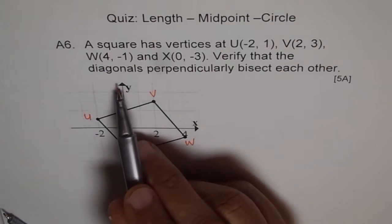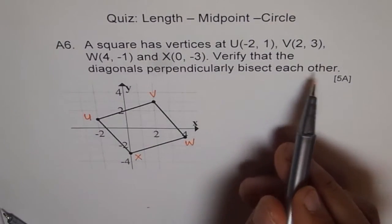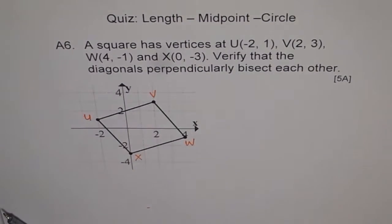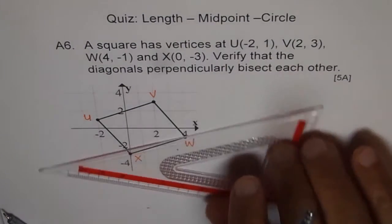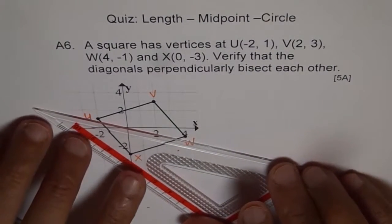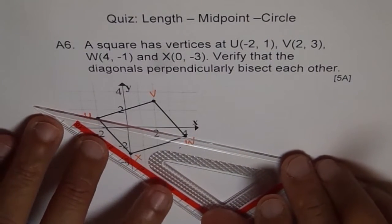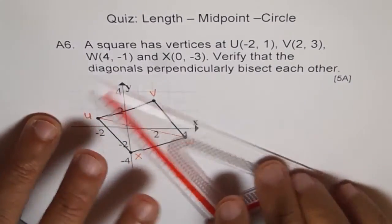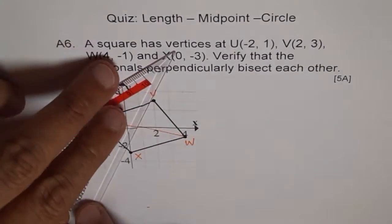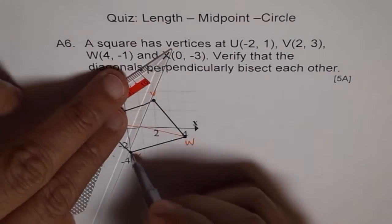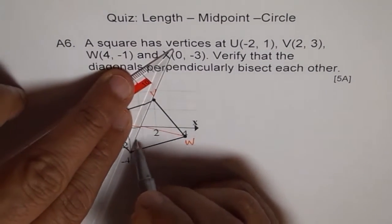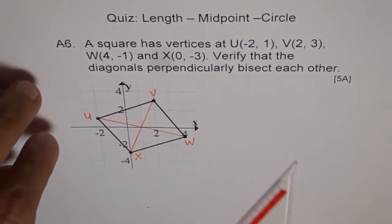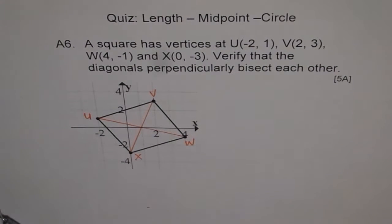Now verify that the diagonals perpendicularly bisect each other. That's not a very difficult problem — it's a very simple problem. What are the diagonals here? Let me join them and show what we need to do. We need to prove that they bisect. Basically you have to find slope.